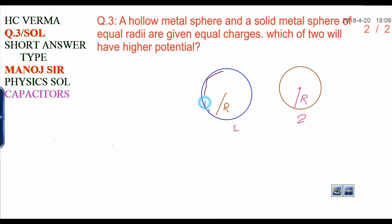Let this be a hollow metal sphere. Suppose that this is hollow and this is solid. Both have the same radii and both are given equal charge. That charge is positive Q, and for the second sphere, the charge is also plus Q.